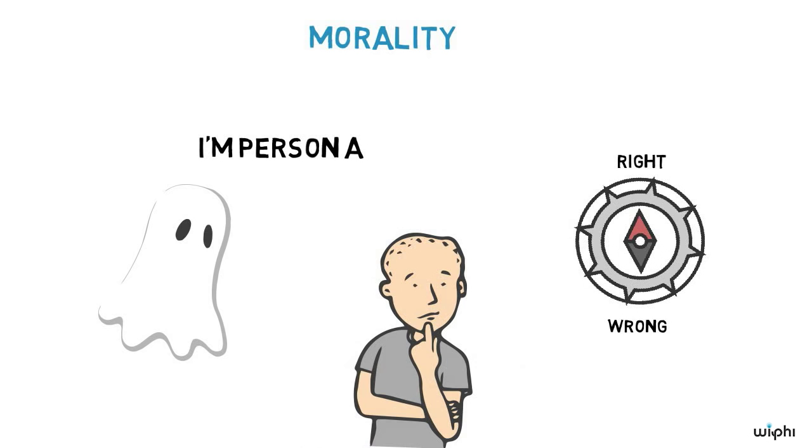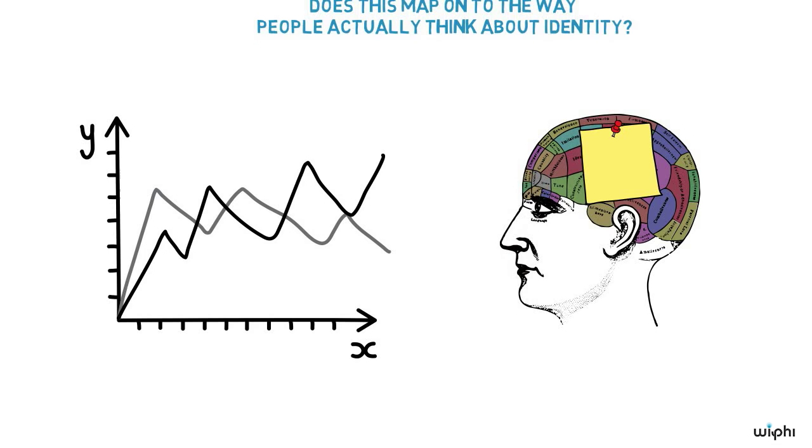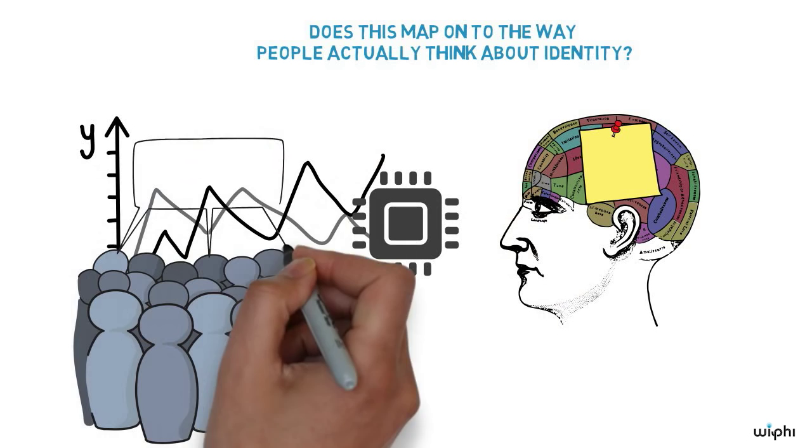Despite the central position this question has occupied in philosophical debates, it's only been recently that philosophers have begun collecting data to show how people actually conceive of personal identity. Locke believed that memories were the most important part of identity, but does this map on to the way people actually think about identity? To find out, Sean and I ran a study where we presented subjects with the microchip thought experiment.